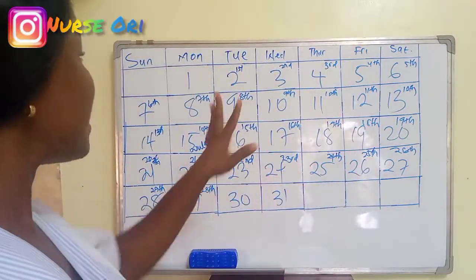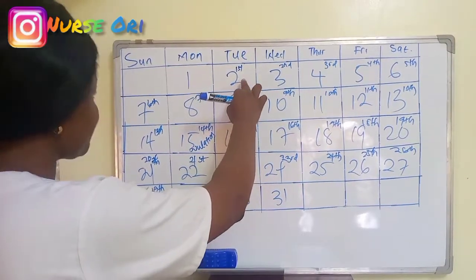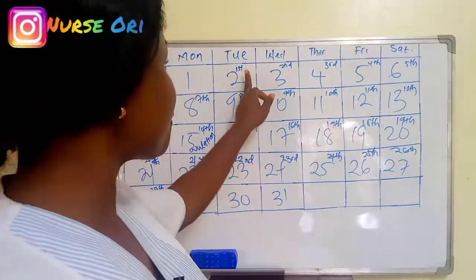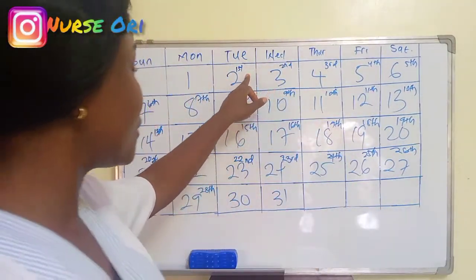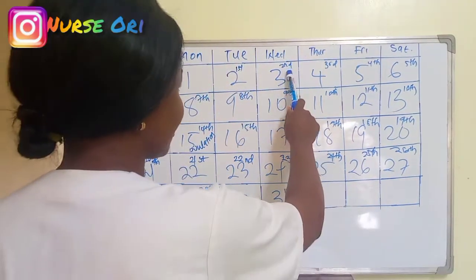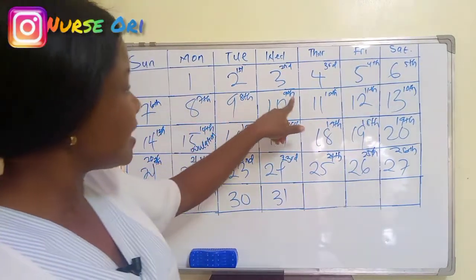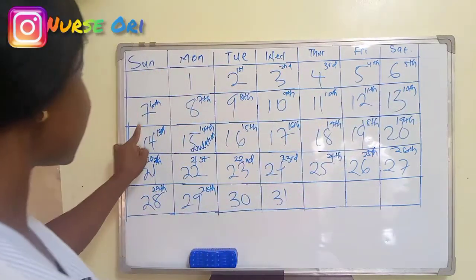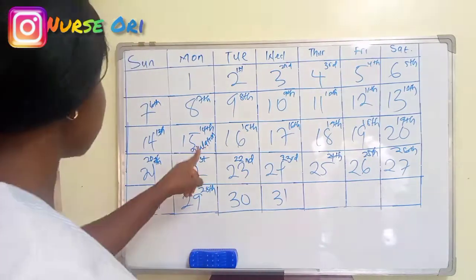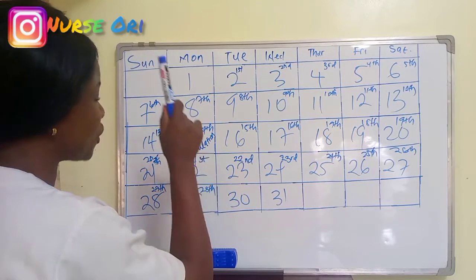So for me, my menses started on the second day of this month. So this is the first day of my menstrual cycle. Counting from the second: the 2nd, 3rd, 4th, 5th, 6th, 7th, 8th, 9th, 10th, 11th, 12th, 13th, and the 14th of my cycle — as you can see written here — is ovulation. So this is the day that ovulation happens, the 14th of my cycle.